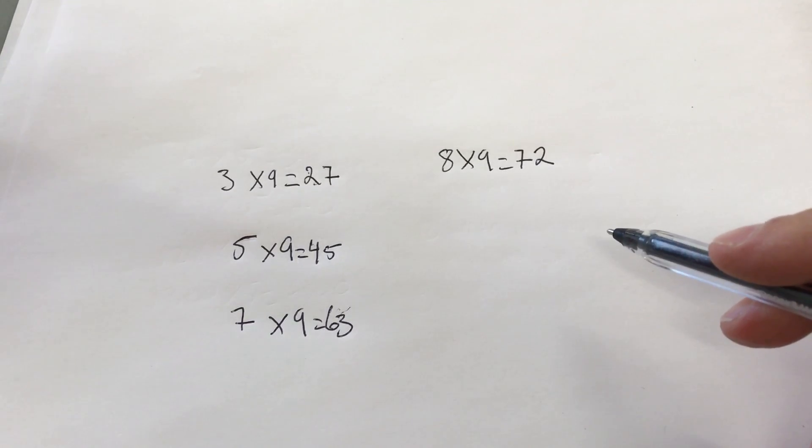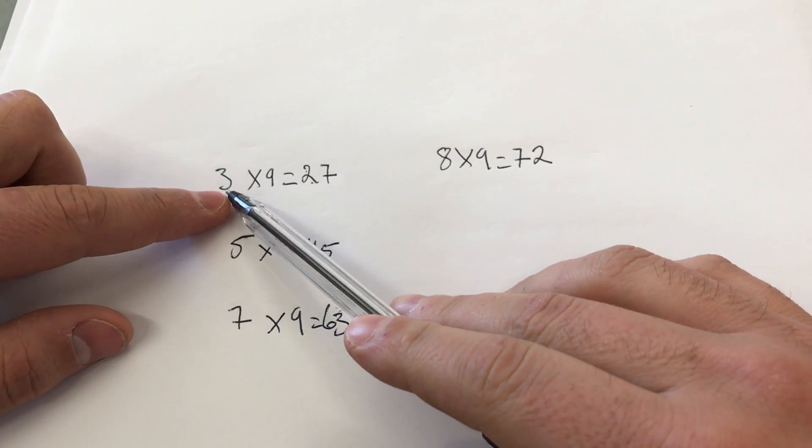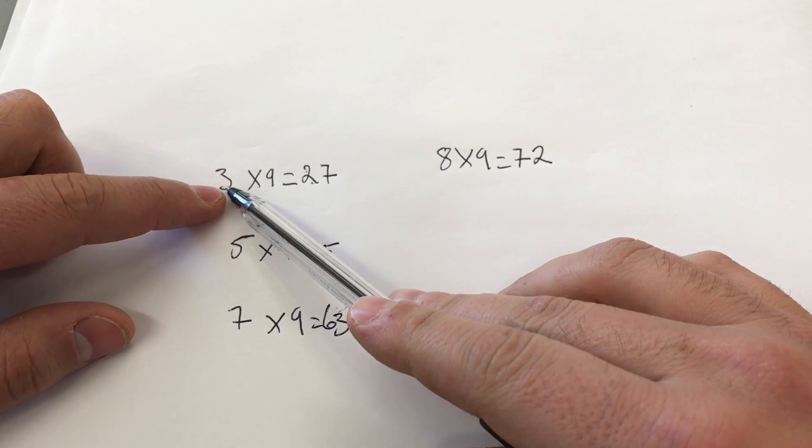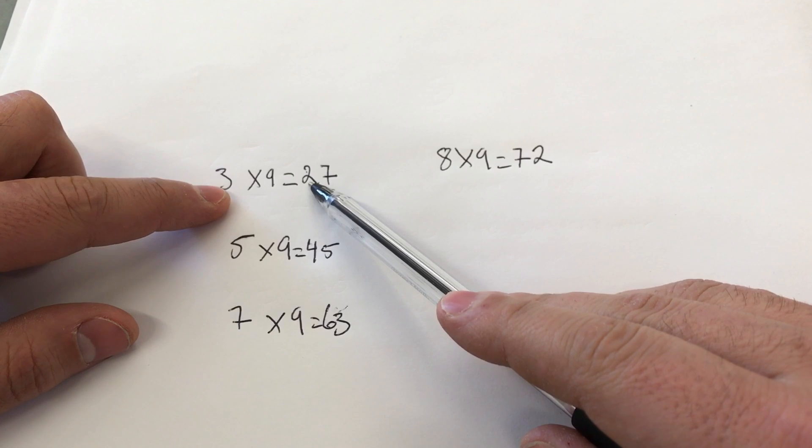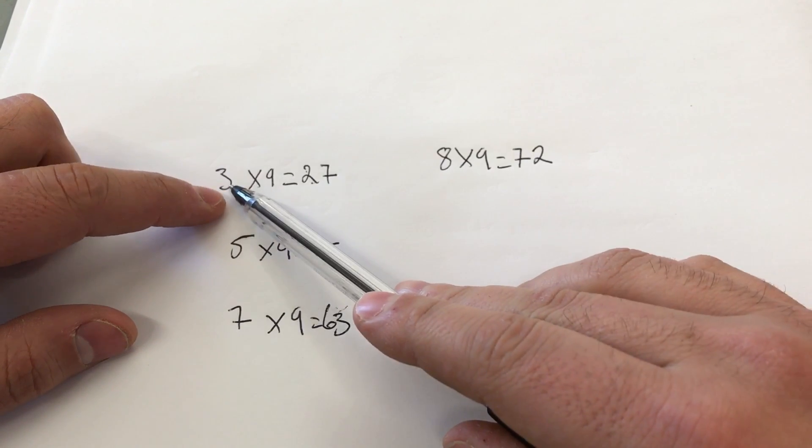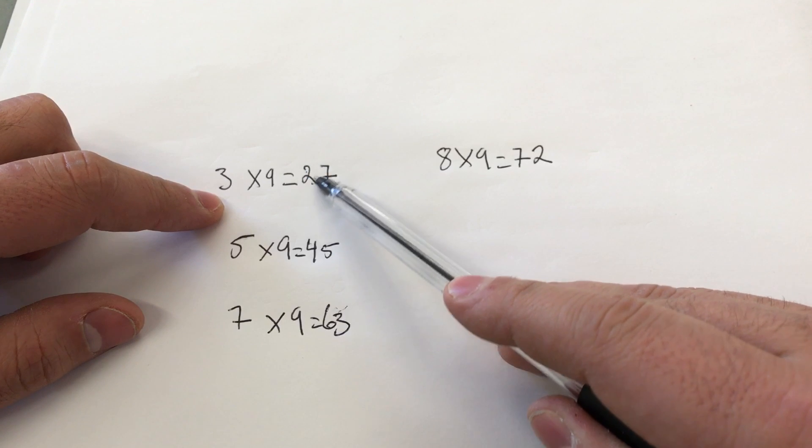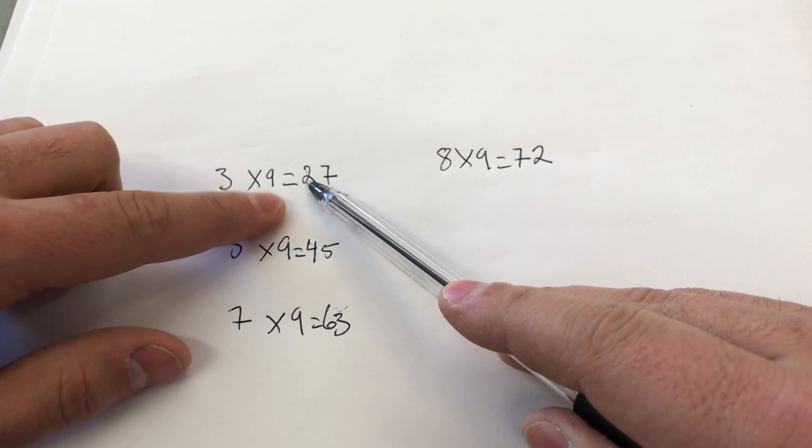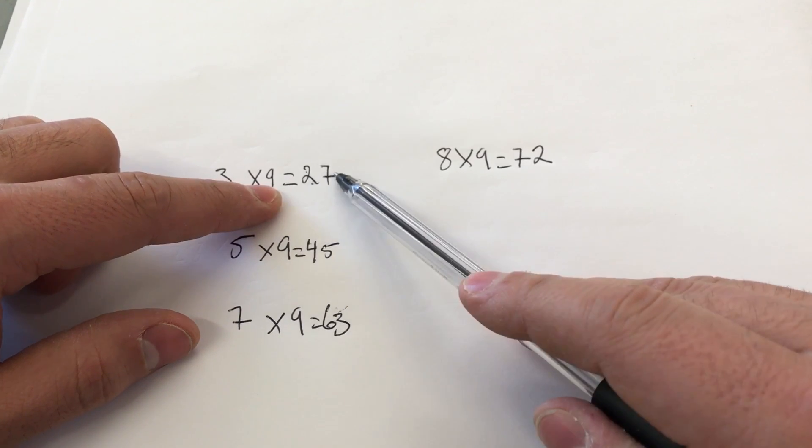It's so simple. Once again, just to reiterate: You take the non-9 number and subtract 1 from that number. That's the first digit. So 3 minus 1 gives us 2. Then you take this answer that you just wrote down as the first digit and subtract it from 9, which gives you 7, your second digit.